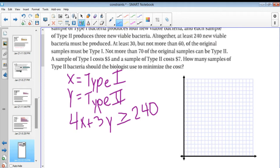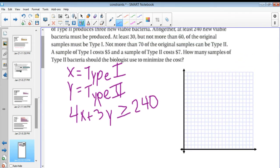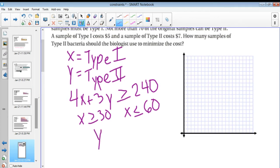At least 30, but no more than 60 of the original sample must be Type 1. So that means x has to be greater than or equal to 30, and x has to be less than or equal to 60. You can kind of write that as a compound inequality. You could have written it as 30 is less than or equal to x is less than or equal to 60, but you don't have to. Now I'm going to be looking at the Y, and it says that no more than 70 of the original sample can be Type 2. So that means that y has to be less than or equal to 70.